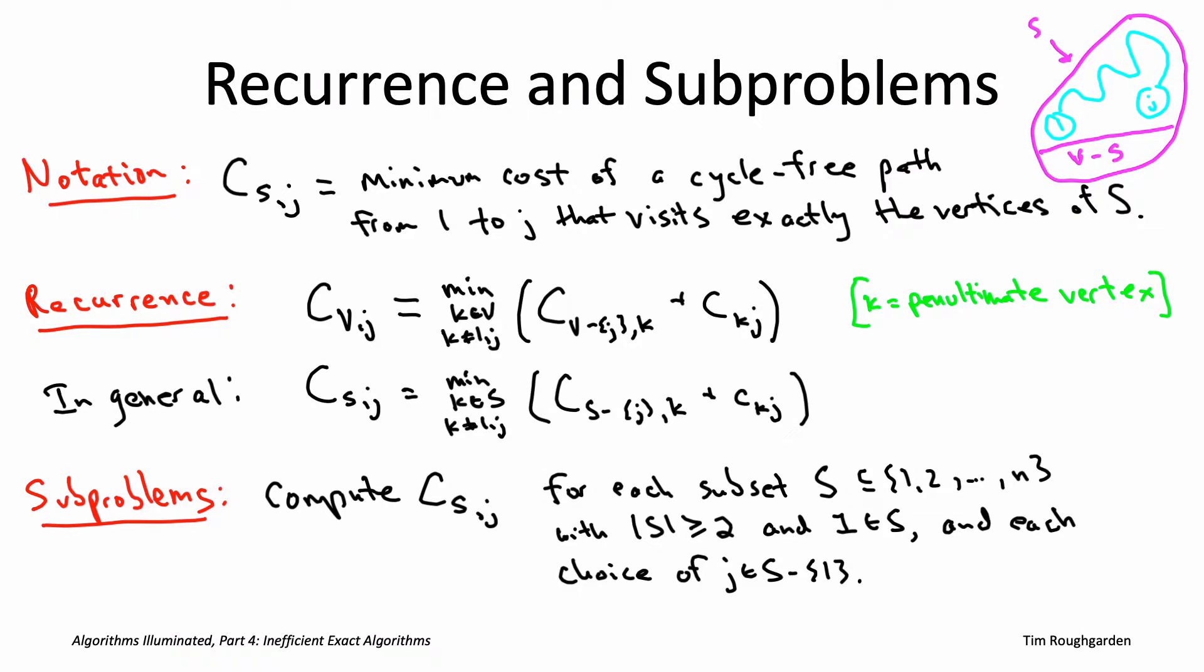So the bad news is this is a lot of subproblems, an exponential number. Because there's n vertices, so there's two to the n different subsets of vertices. Now capital S here, it can't be any vertex subset. There's a couple mild constraints, but still there's an exponential number of different capital S's that you need to worry about. Plus then there's again another linear in n number of choices of J.